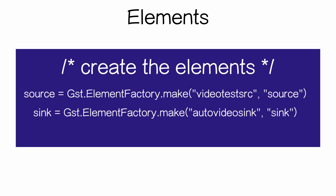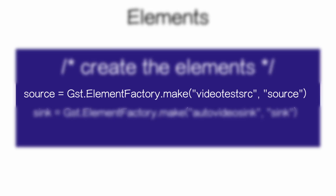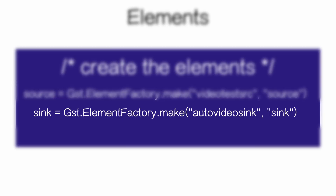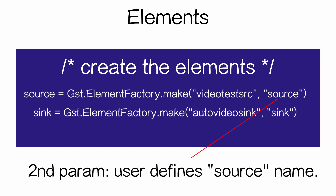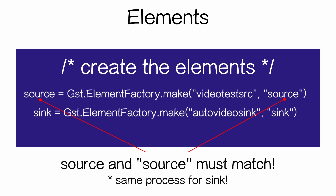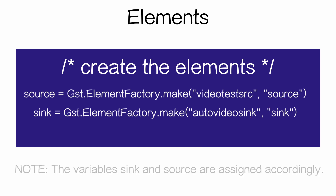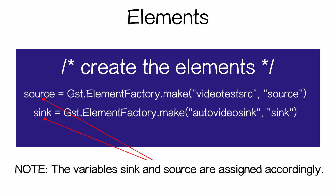Here we're creating elements. We use the element_factory.make() function to create the source. The first parameter is the plugin, the second parameter is the user-defined source name. The source name and the source variable have to match. Then we have the source and the sink assigned accordingly.